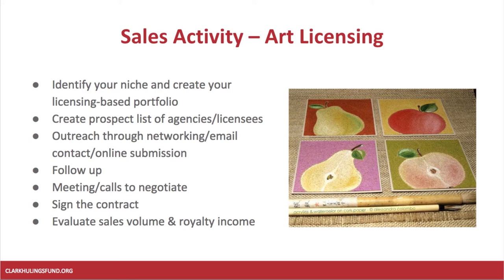You'll be looking at sales volume — this is a longer sales cycle because licensing can be 18 months out. You're going to be looking at your quarterly royalty income and determining: is this a good match for me? How is this working out? What changes would I make going forward? That's where your decisions will be made.